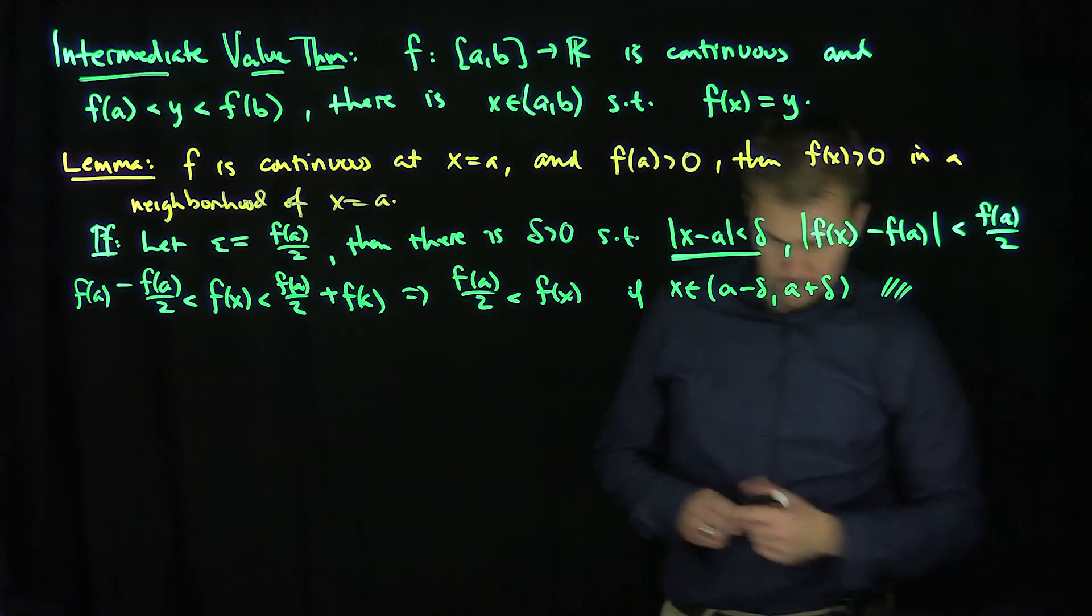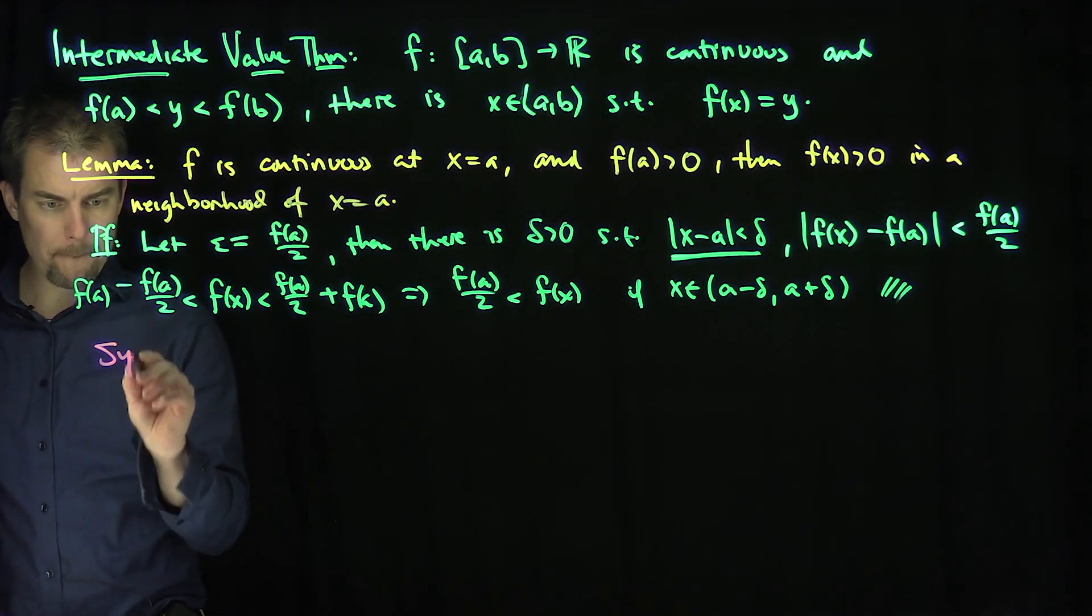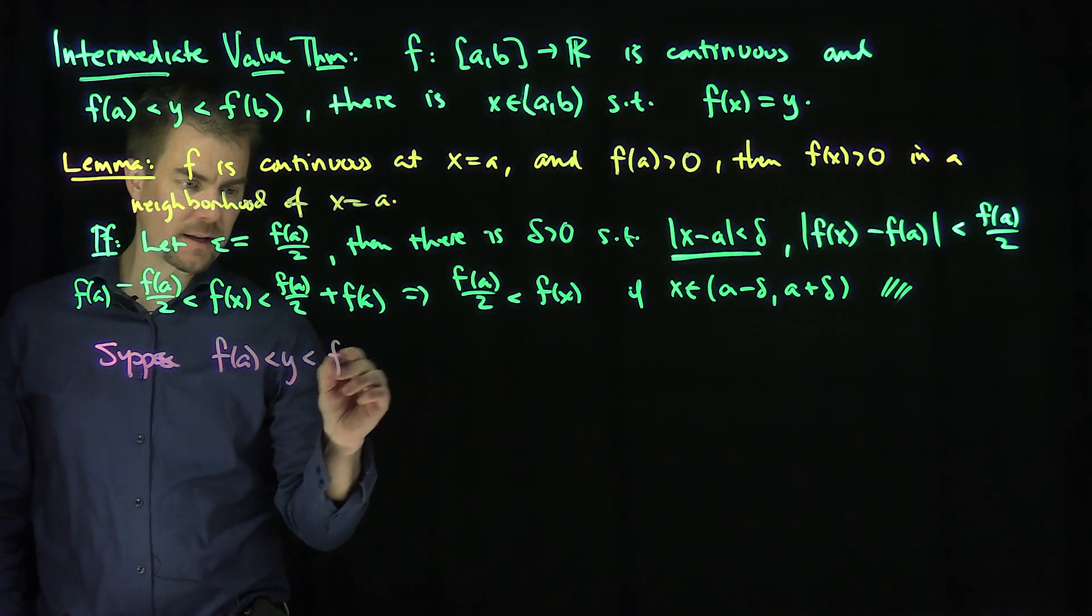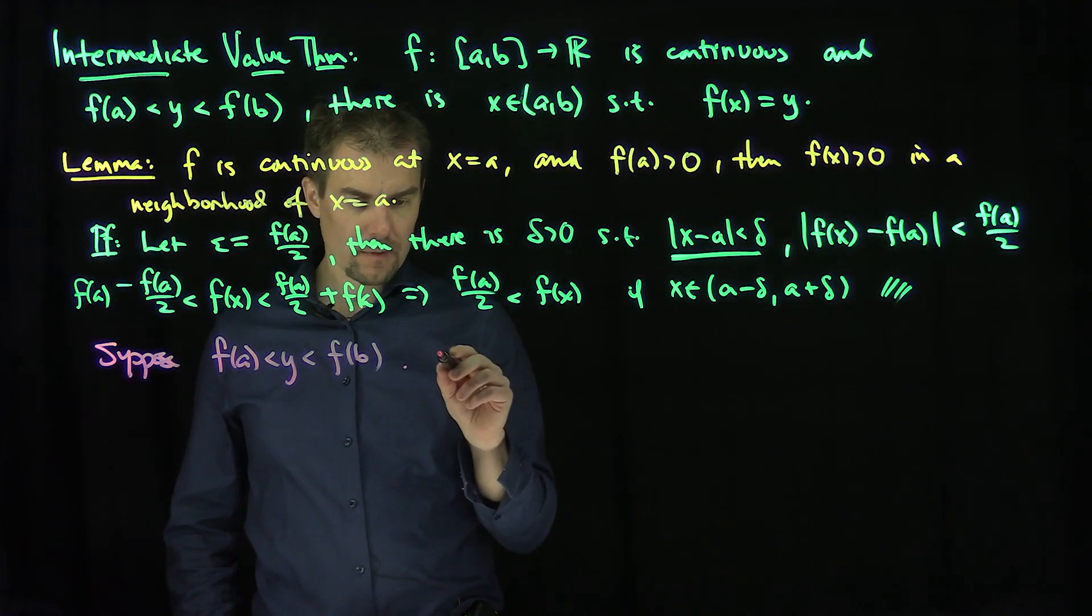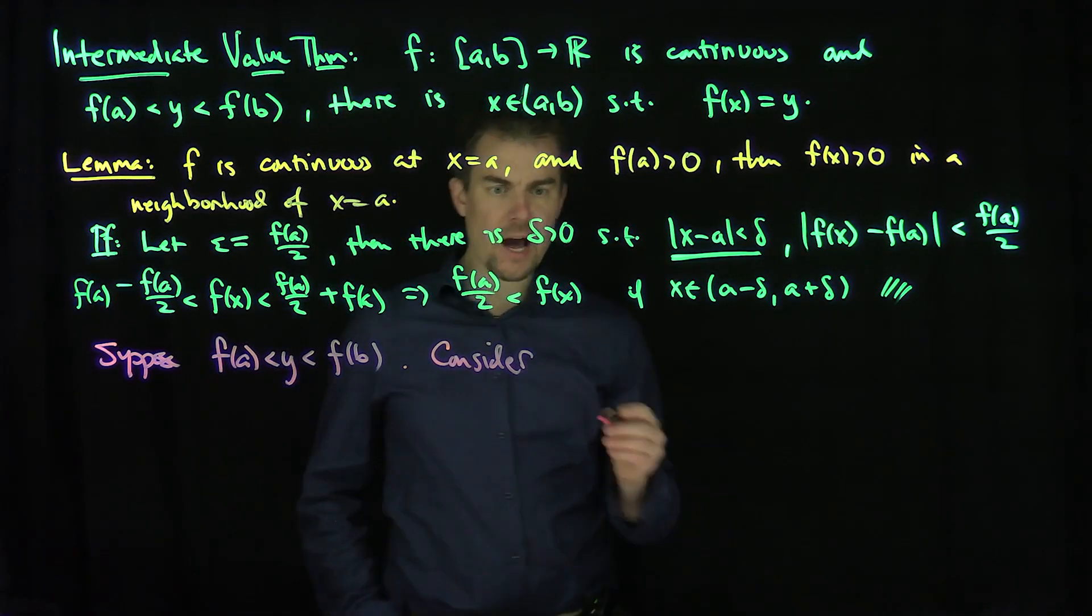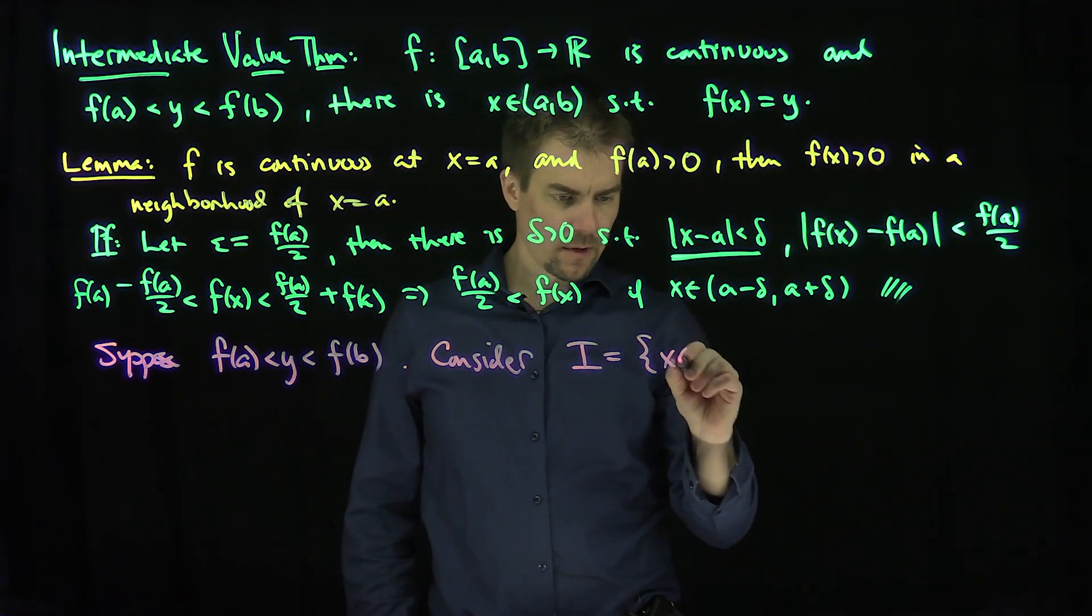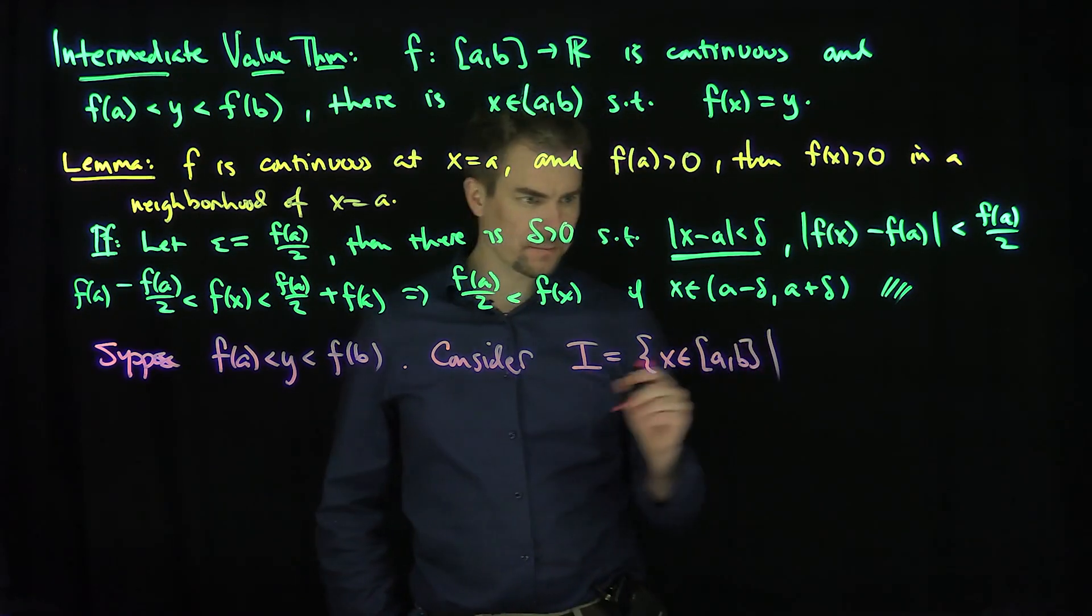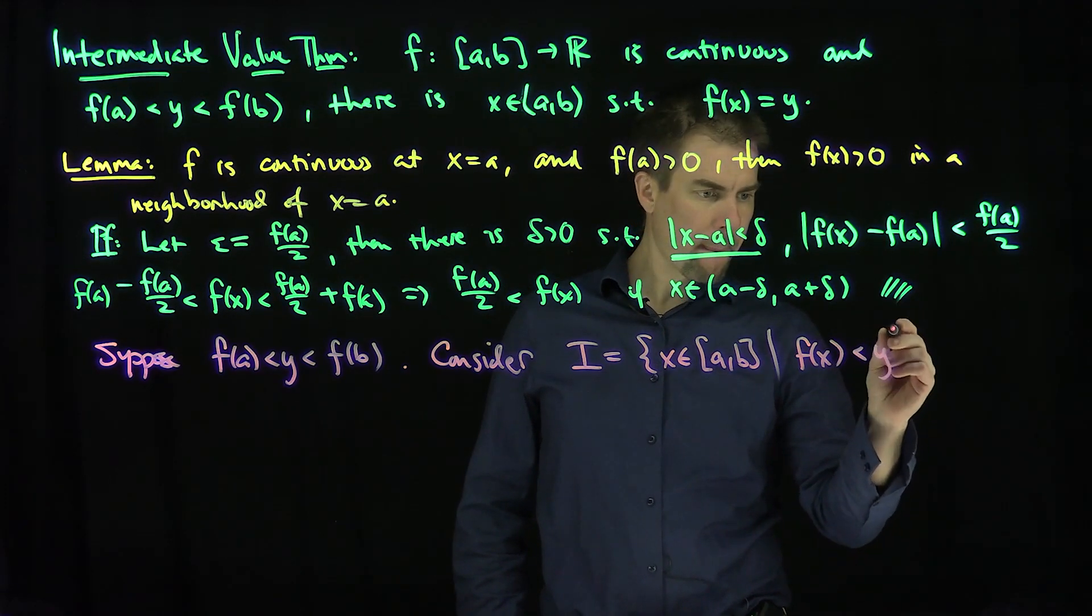Now let's proceed to the proof of the Intermediate Value Theorem. Suppose that f(a) less than y less than f(b), and consider the set I, which is the set of all x in the interval [a, b] such that f(x) is less than y.